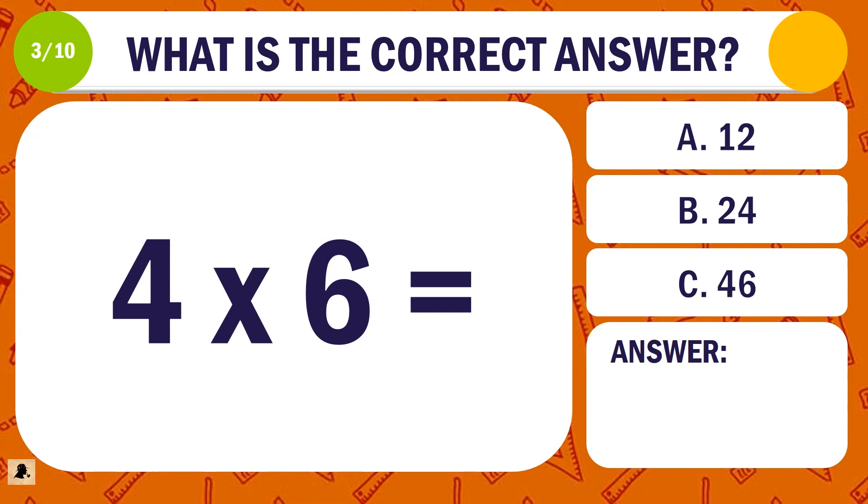Question 3. What is the correct answer for 4 times 6? A. 12. B. 24. Or C. 46.